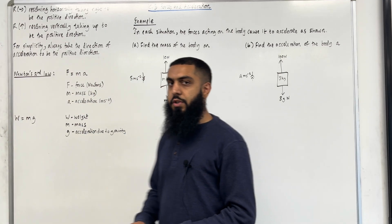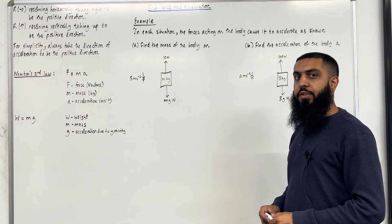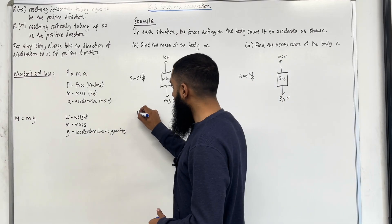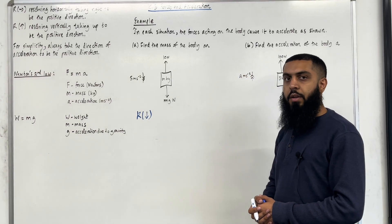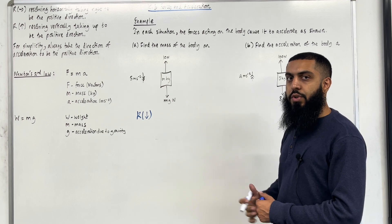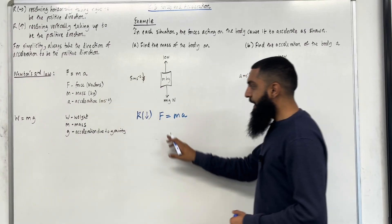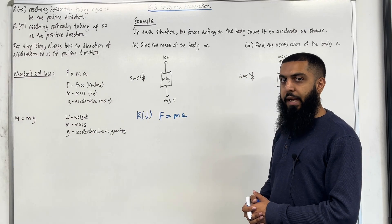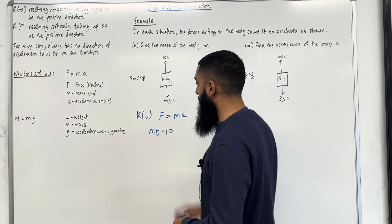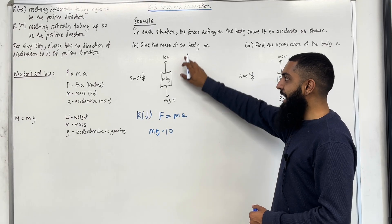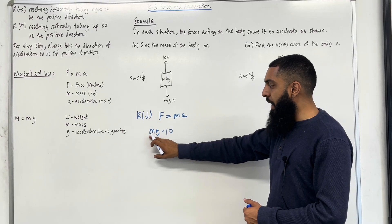Let's have a look at the solution to Part A. As you can see, the mass M is acting in the vertical direction, so the very first step is to resolve vertically — in the direction of the acceleration, which is downwards. I'll take downwards to be the positive direction. To generate the equation of motion for this body, I need to use Newton's Second Law: F = MA. The resultant force F will be Mg minus 10, because 10 Newtons is acting upwards and we've taken downwards to be the positive direction.